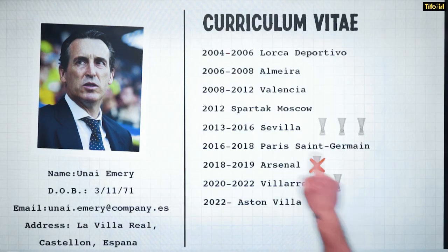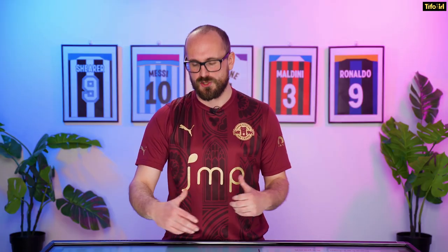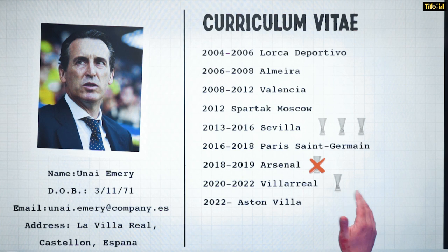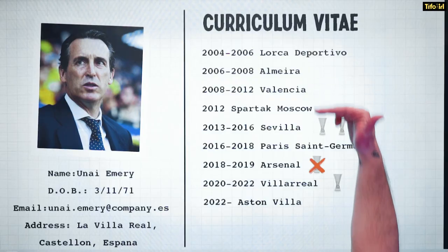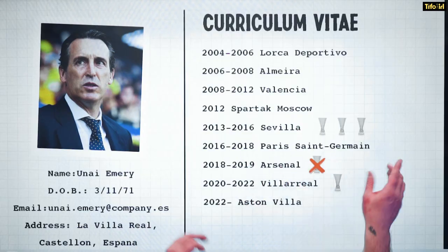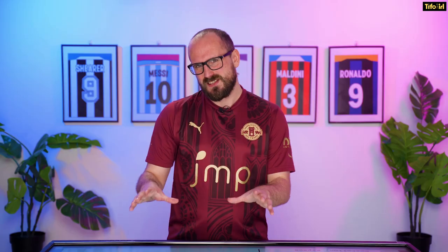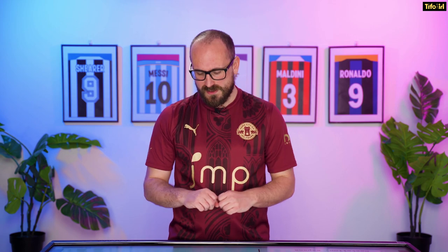This is Unai Emery's CV. Most people's eyes will be drawn to the Arsenal period, but what's most interesting is there's a very specific flow. Emery has periods at mid-table Spanish sides — Valencia, Sevilla, Villarreal — where he has a really good success rate, including four Europa League titles. These are then punctuated by trips abroad: Spartak Moscow went badly, PSG was mediocre, and Arsenal — which is perhaps a little undervalued — started well, culminating in a Europa League final, before falling off quickly.